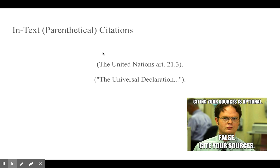You will be expected to put citations after your quotes throughout the paper, and the human rights paragraph is no exception. Just because we're quoting from a source that we all have does not mean we don't give it credit. When quoting one of the human rights articles, give proper credit by including the citation — just replace the article number with whichever one you are quoting. As Dwight would say, citing your sources is optional — that would be false. Cite your sources. It's important. You're giving credit to the people that gave you access to that work.